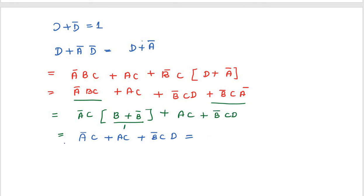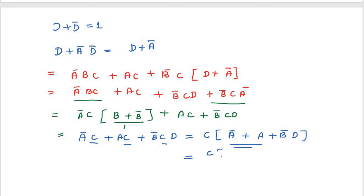C is common for all three terms. Inside: A' + A + B'... What is A + A'? It equals 1. So C(1 + B'C) = C · 1 = C. This is the minimization of logical expression using Boolean laws, giving F = C.